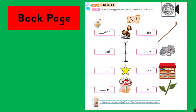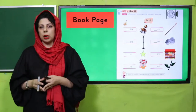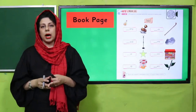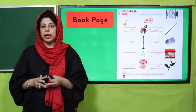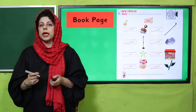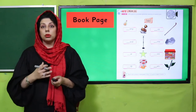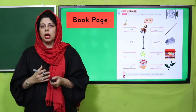Dear bachiyo, aaj ki kitab ke safi mein kuch tasawir dhi gahi hai. Unke aadhe aadhe naam hain. Baqi ka adha naam jo na mukammal hai, aapne mukammal karna hai. Aapne mukammal karne ke liye aapko ek nai sound sikhni hai.